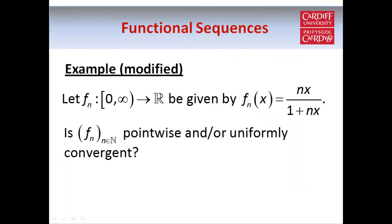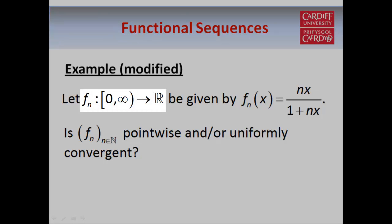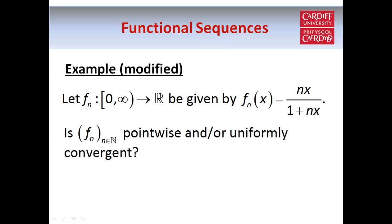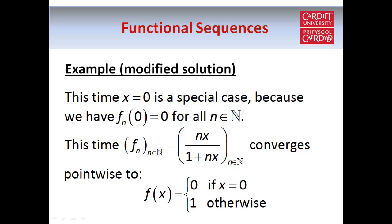Now let's consider the same example but with a modified domain: the interval from 0 to infinity, including 0. At x = 0, fn(0) = 0 for all n, so the limit is also 0. For non-zero values of x the functions still converge to 1. So the pointwise limit function is now 0 if x = 0, and 1 if x > 0. The sequence is still pointwise convergent, but the limit function has changed.